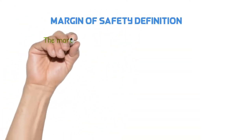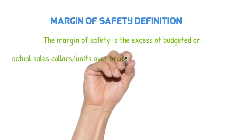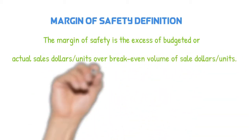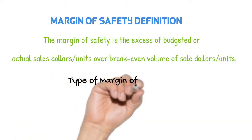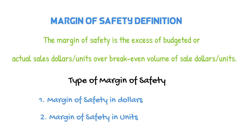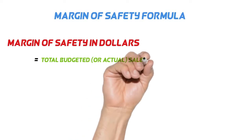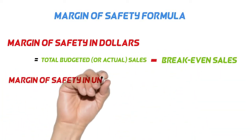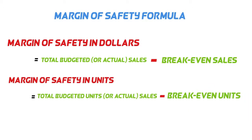Let me explain margin of safety. Margin of safety is defined as the excess of budgeted or actual sales dollars or units over break-even volume of sales dollars or units. We can calculate margin of safety in dollars and units depending on your requirement. Margin of safety in dollars equals total budgeted sales less break-even sales. Margin of safety in units equals total budgeted sales in units less break-even units.